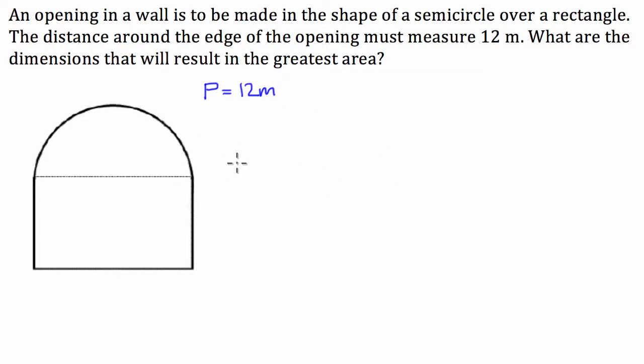So first of all, what I've got is I'm going to have to make an expression for the perimeter of this semicircle over a rectangle. So what I'm going to do to start with is I'm going to make an expression for the semicircle. So I'm going to call the radius of this semicircle x. So I'm going to put an x down there.